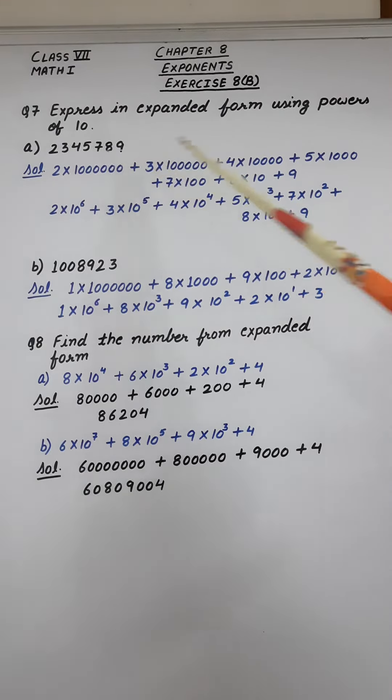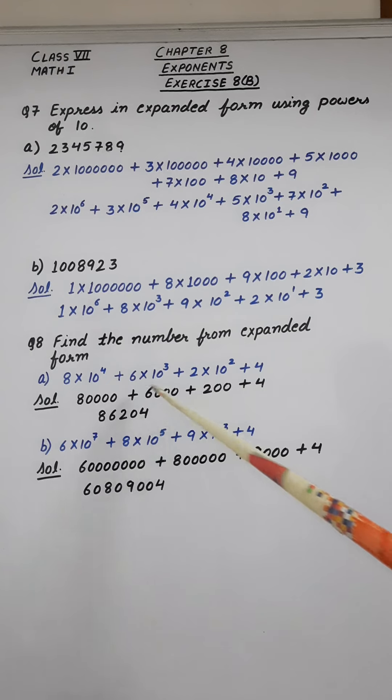Now let's start question number 8. Find the number from this expanded form. This is the expanded form of a number, so first of all let's find the answer. Here 10 raised to the power 4, that means 4 zeros with 8. 10 raised to the power 3, that means 3 zeros with 6. 10 raised to the power 2, that means 2 zeros with 2, plus 4. And on adding all the numbers, the result is 86,204. This is the number we obtained from this.